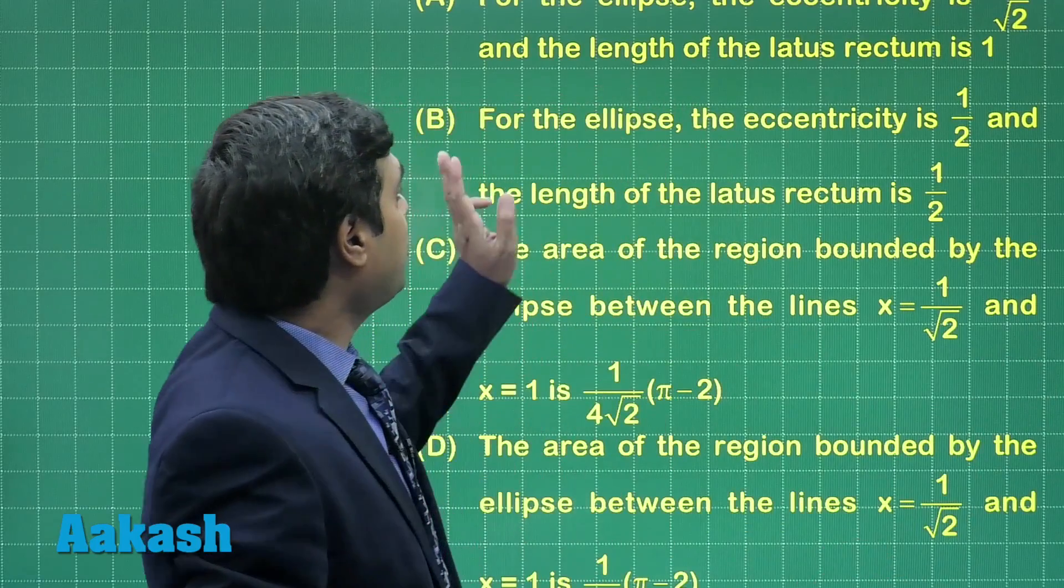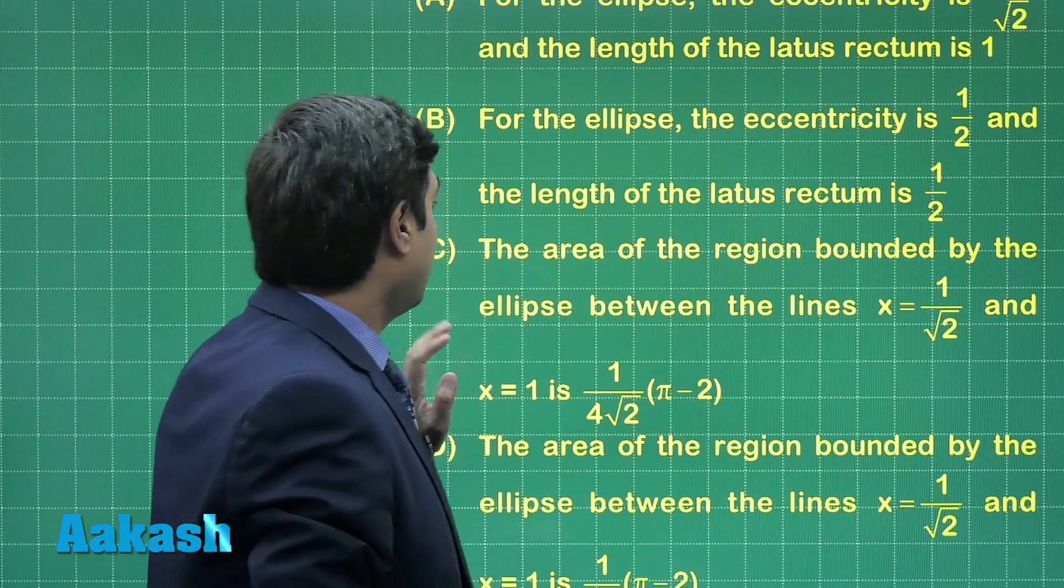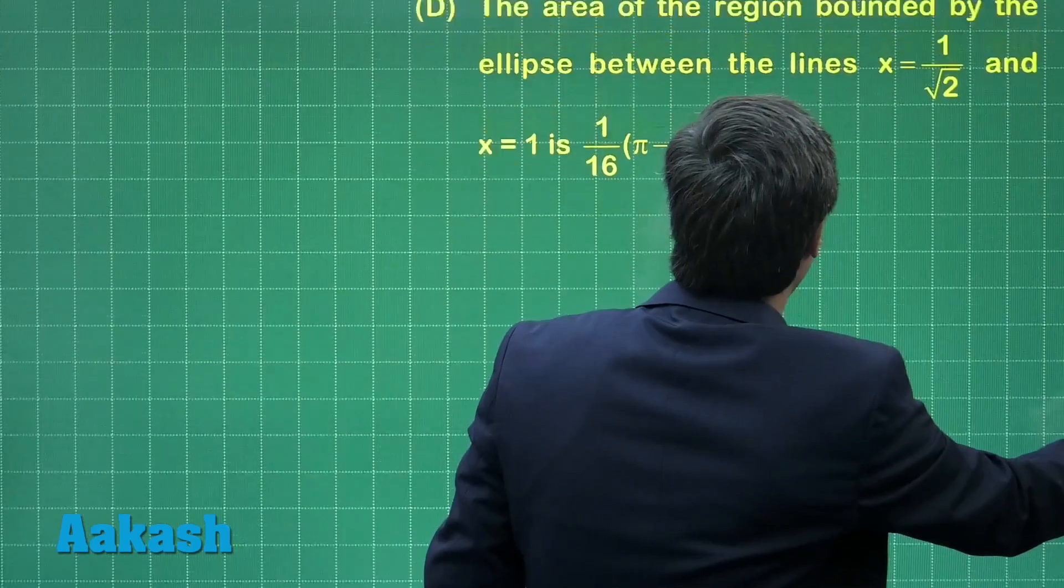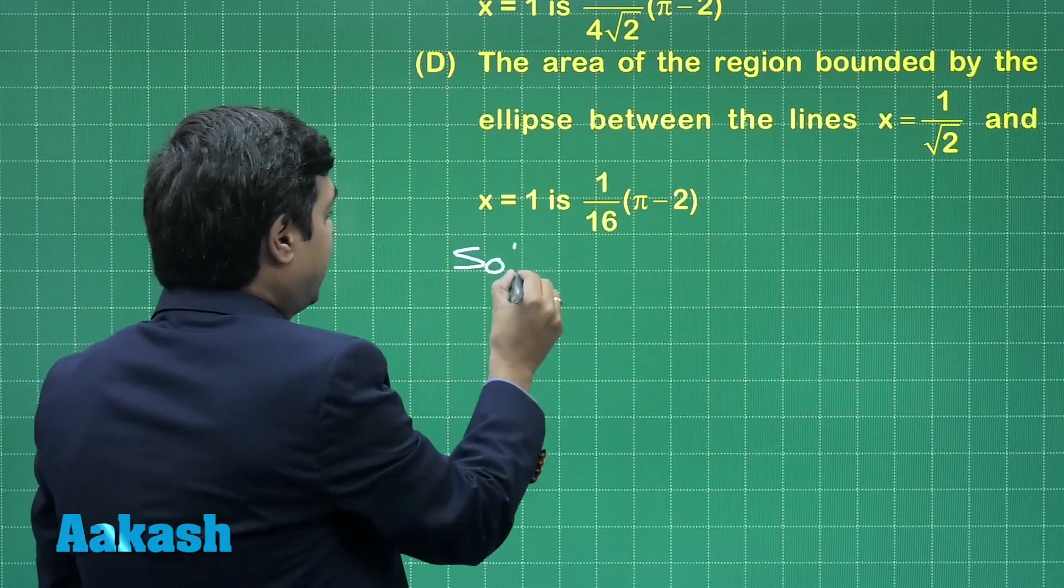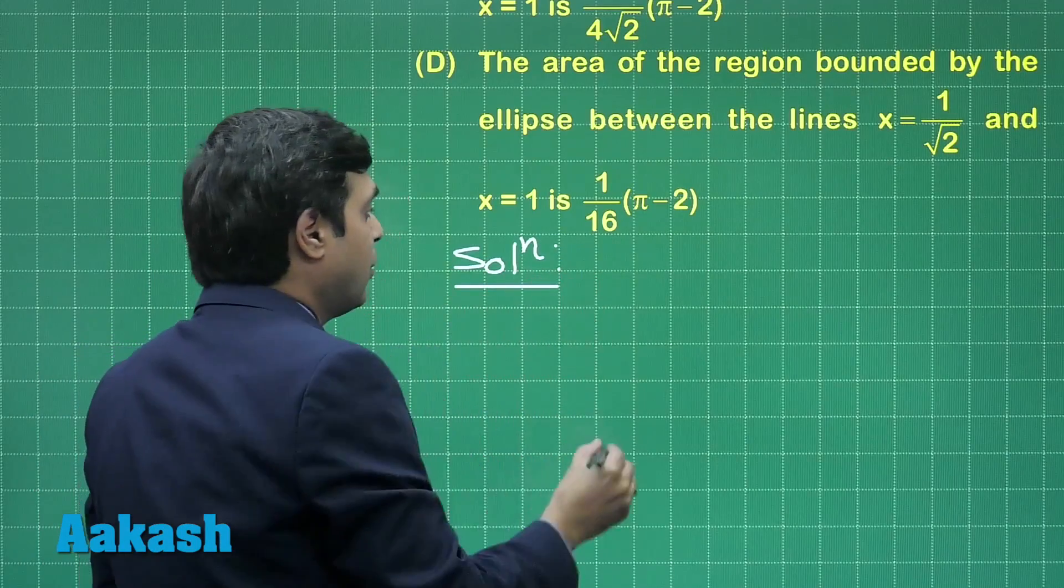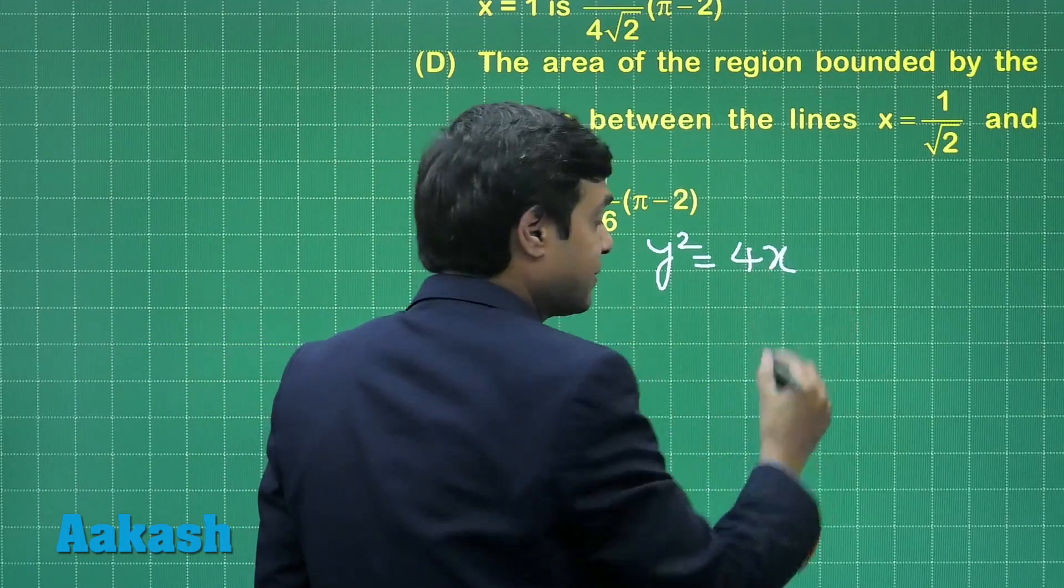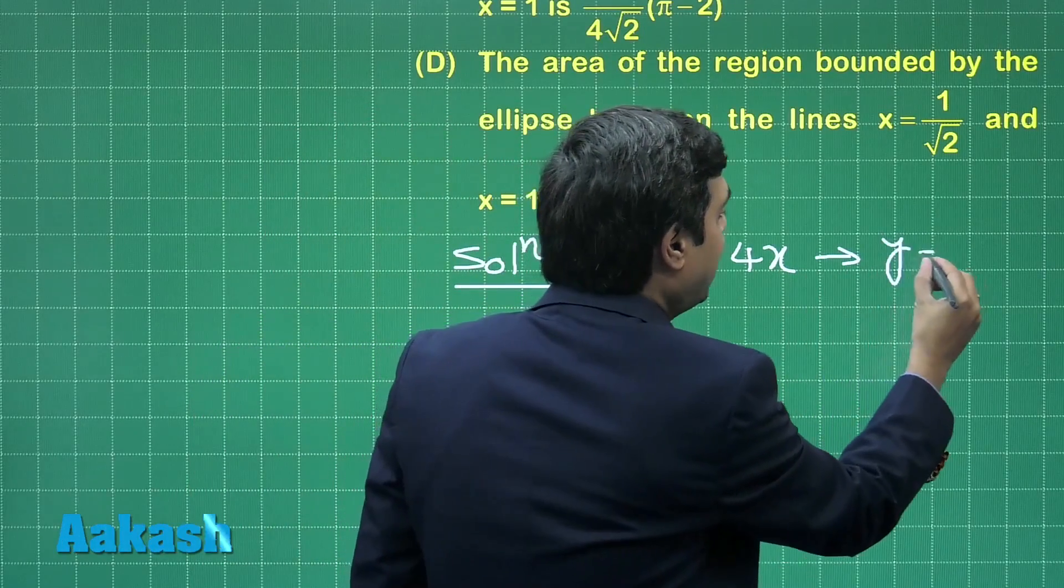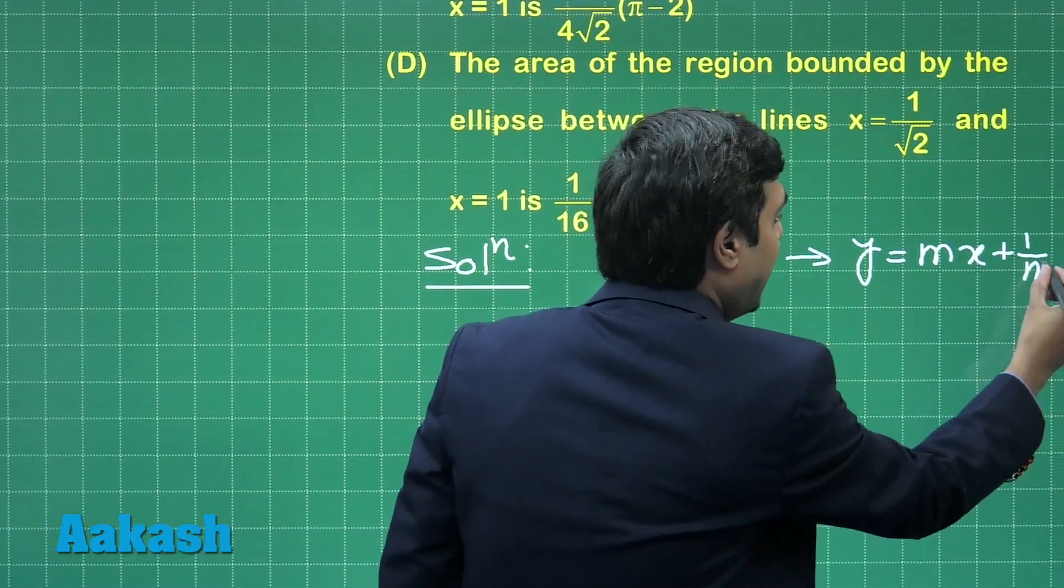Options are about eccentricity of ellipse, length of latus rectum of ellipse, and area bounded by some curve. So first we need the equation of ellipse. Starting this question, for parabola y² = 4x we can write the equation of tangent as y = mx + 1/m.